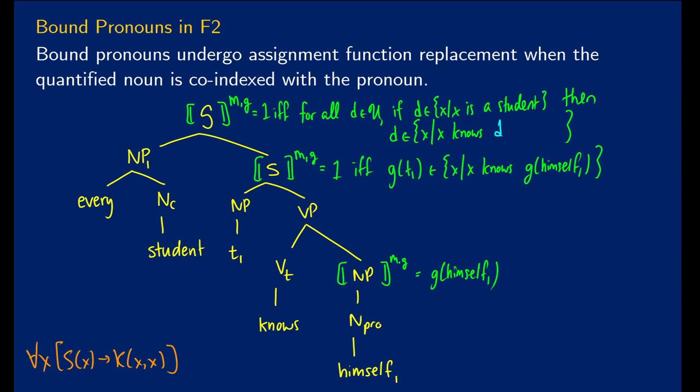So now instead of D being in the set of X, such that X knows himself₁, we've now changed one to point to D. So it's going to be if D is the set of X, such that X is a student, then D is going to be in the set of X, such that X knows D. In other words, D is going to know D. So for every D, if D is a student, then D knows D. So D knows himself. We could have used herself or themself here. What matters is we have a reflexive pronoun here. And in this case, it is bound.